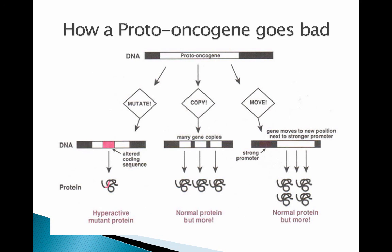This is summarized in figure 14.8. Proto-oncogenes can mutate to become a hyperactive mutant protein, undergo gene duplication events during growth and replication, or get moved next to a strong promoter causing overproduction of the protein. All these result in a dominant phenotype — the normally useful proto-oncogene goes haywire by producing too much or overactive protein, and that causes the downstream problems that lead to cancer.